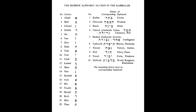6. Tipareth — Beauty, Harmony. 7. Netza — Victory, Justice. 8. Hod — Glory, Peace. 9. Yesod — Form, Prudence. 10. Malkuth — World, Kingdom, Realization.